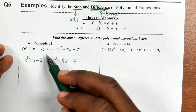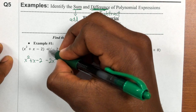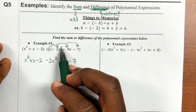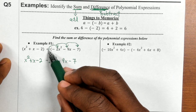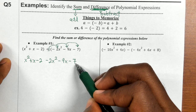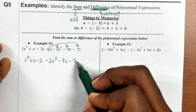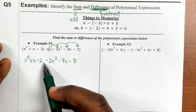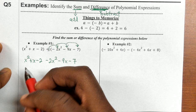Technically, in front of the second polynomial is a positive 1, and you're distributing that positive 1. Positive 1 times negative 2x squared is negative 2x squared; negative 9x times positive 1 is negative 9x; 1 times negative 7 is negative 7 — multiplying by positive 1 keeps everything the same.